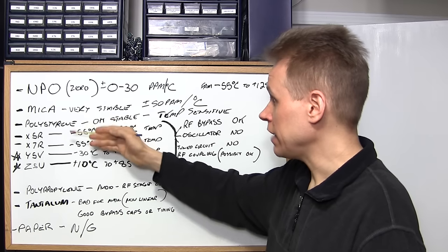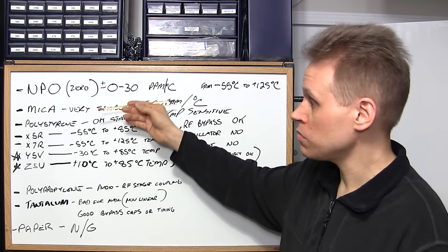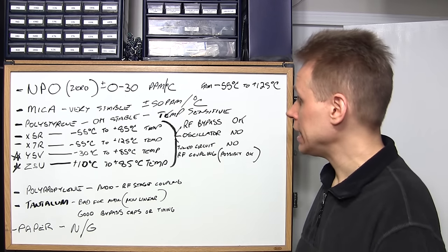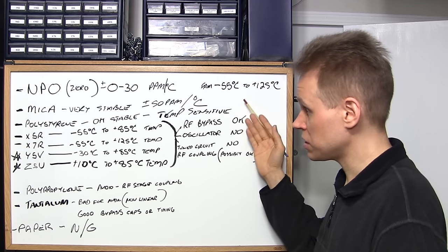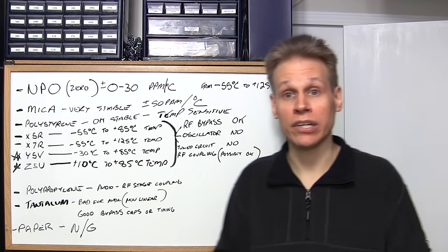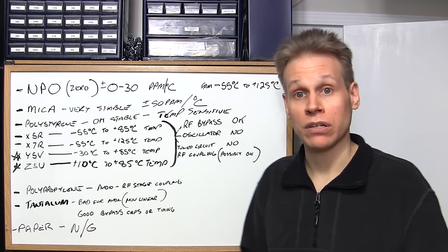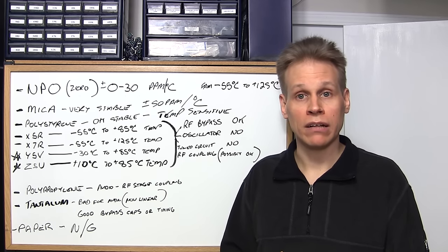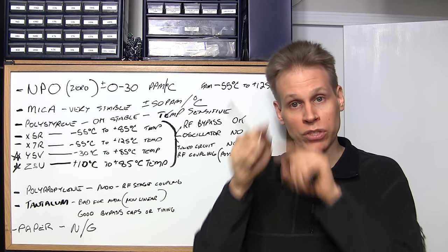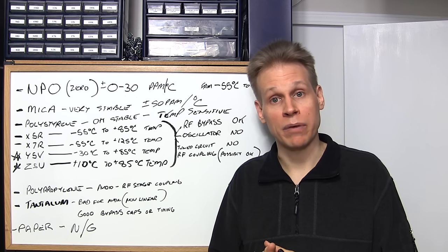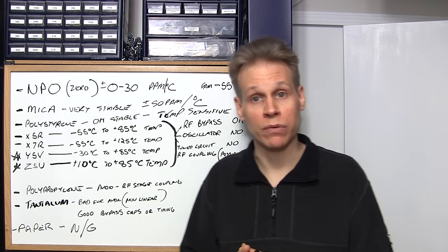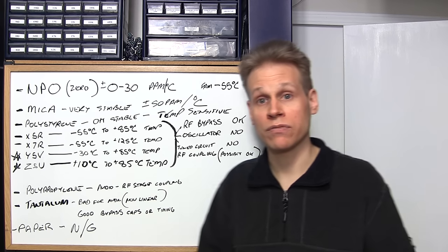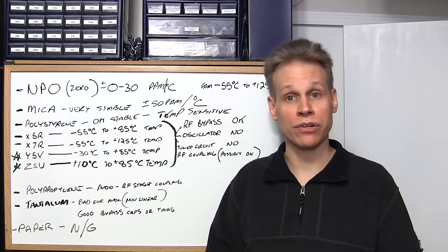The next capacitor is MICA — also very, very stable. You'll find it in the same kinds of circuits as the NPO capacitor. Its accuracy is ±50 parts per million per degree C, so not quite as good as the NPO but still very good. You'll find mica capacitors in a lot of older receivers — those domino style capacitors are mica — and some newer style mica capacitors almost look like a little brown piece of gum with two legs. Very good for RF service; mica and NPO are really at the top of the list for oscillating circuits or any RF circuitry.